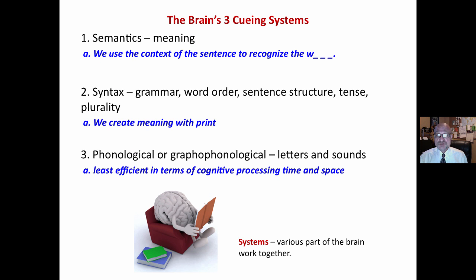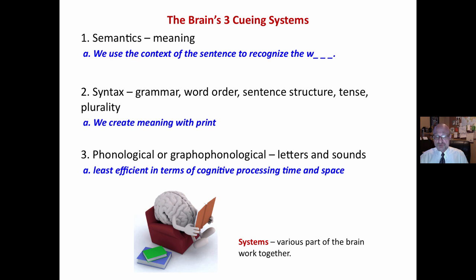There are six ways to identify words. The brain uses three cueing systems. The first is semantics — meaning we use the context of the sentence. This is what our brain is doing as it encounters a word.